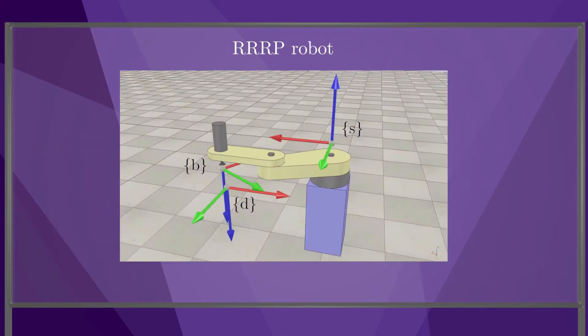We apply this algorithm to the inverse kinematics of a four-joint RRRP arm. The desired end-effector configuration is illustrated by the frame D, but our initial joint vector guess theta zero would put the end-effector frame B at the configuration shown.